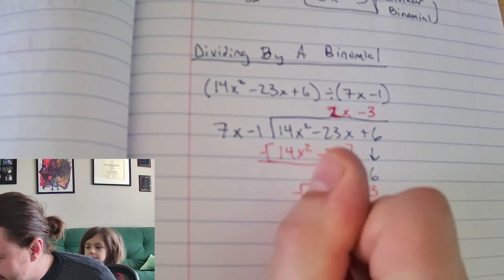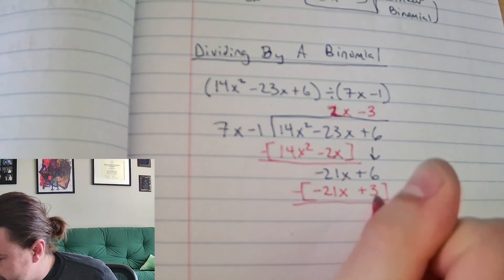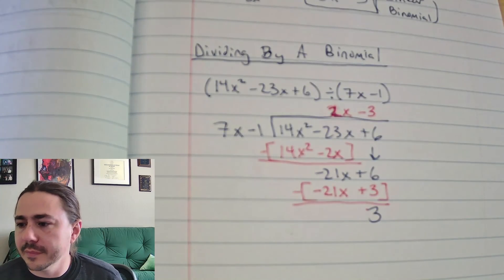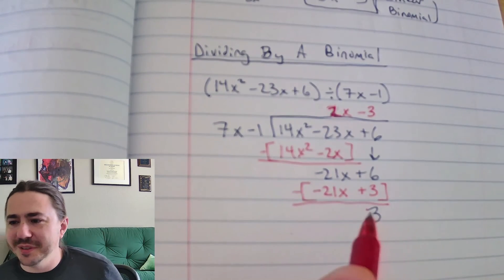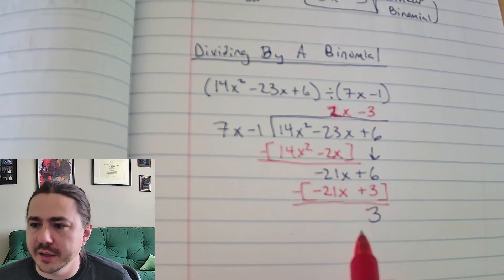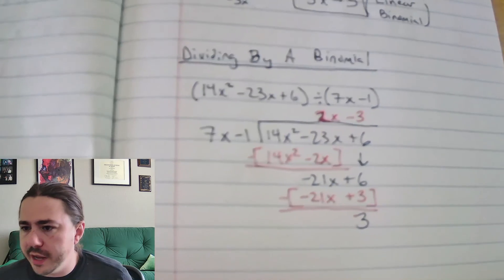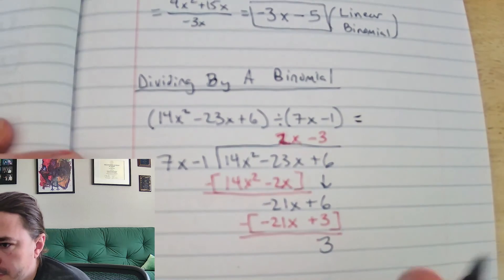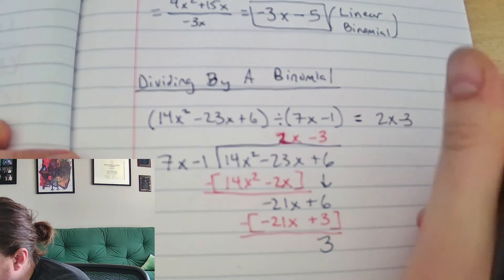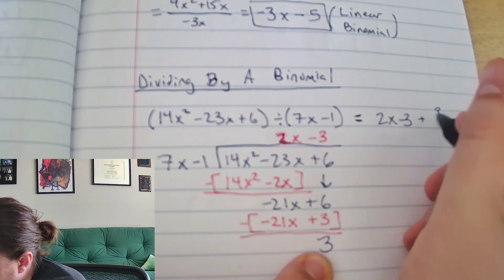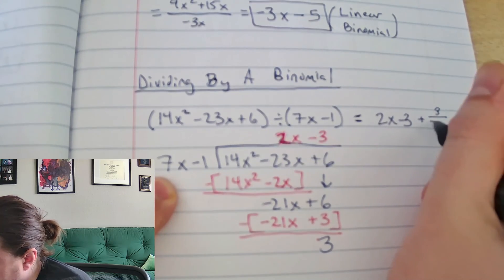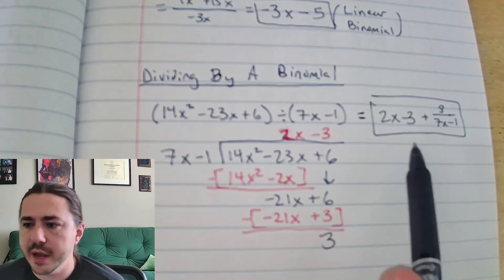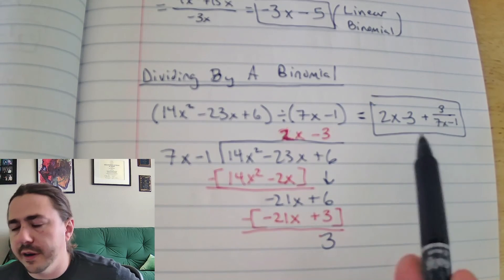When we subtract: negative 21x minus negative 21x is 0, and 6 minus 3 is 3. Our remainder is 3. So the way I write my quotient plus remainder looks like this: 2x minus 3 plus the remainder divided by the divisor: 3 over 7x minus 1. So this equals 2x minus 3 plus 3 over (7x minus 1).